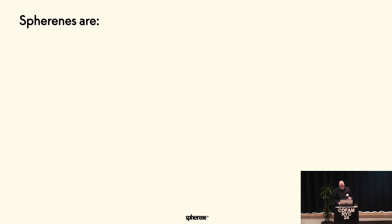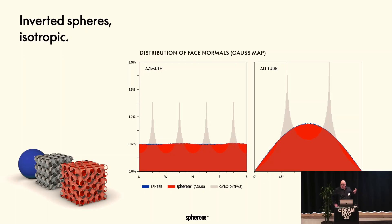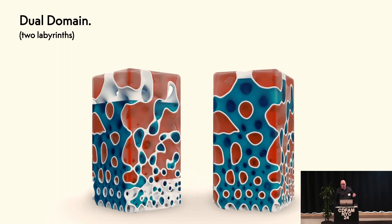To round this up — what are Sphirins? They are inverted spheres, as I said. You can see that on this diagram showing the Gauss map, the distribution of surface normals. The gray distribution is the gyroid — it has peaks because it has to fit into a cube, it has to start on one side the same manner it ended on the other, so you get more of some directions. Whereas the Sphirin and the sphere are totally homogeneous, rounded off, isotropic. Sphirins are always dual domain, as are all minimal surfaces, meaning they have two separate spaces that don't interleave — they never meet. You can fill them with two different liquids if you want.